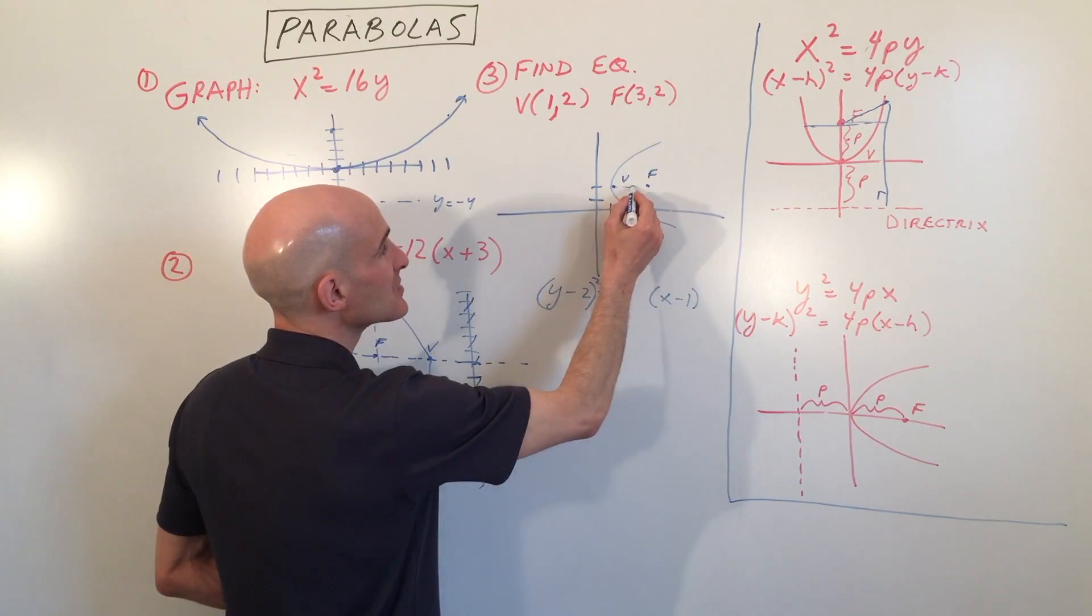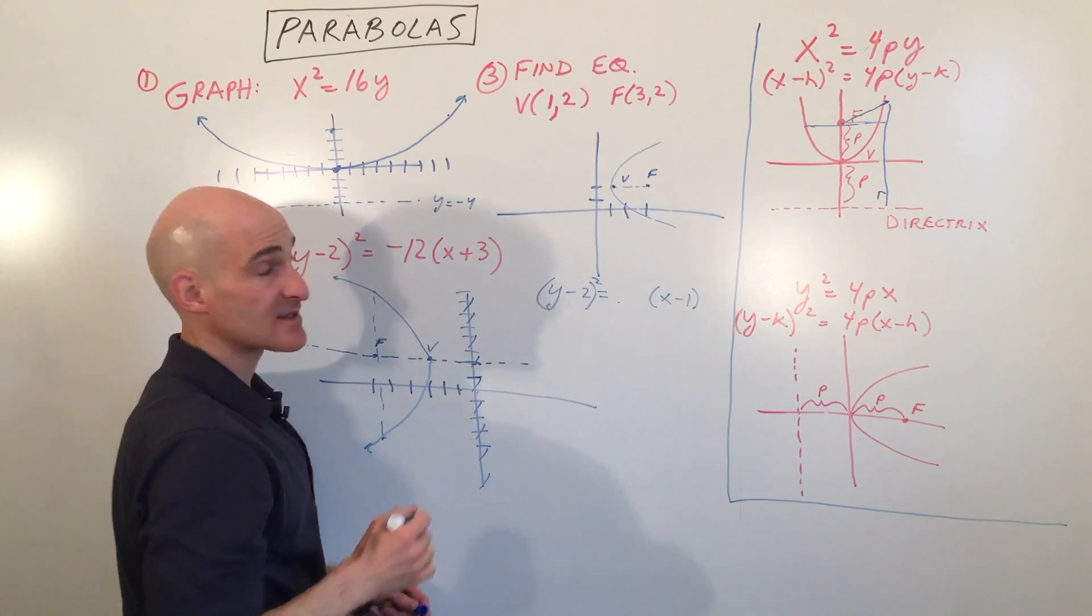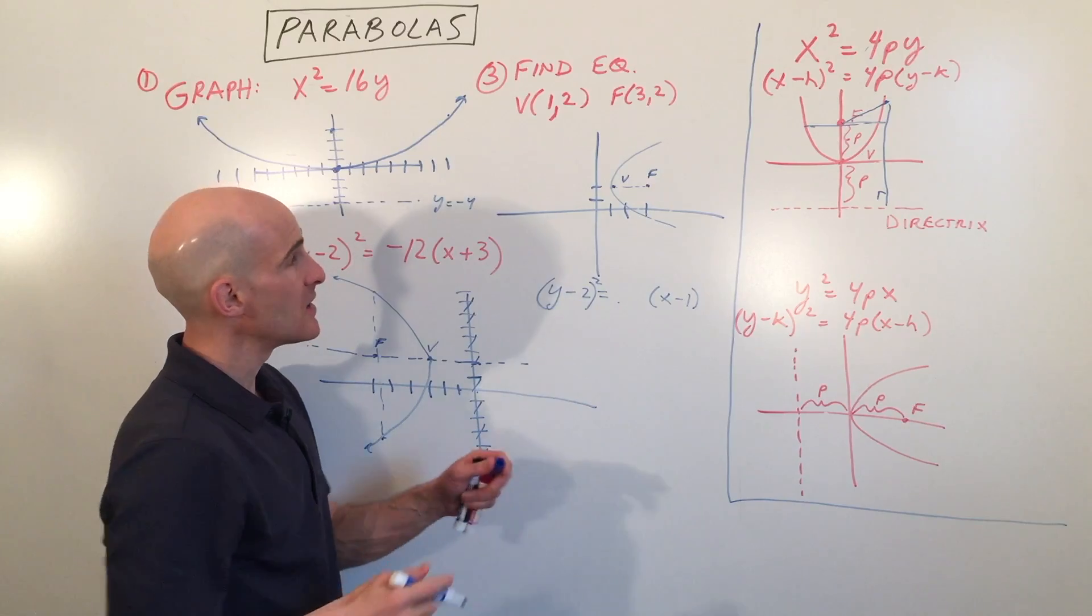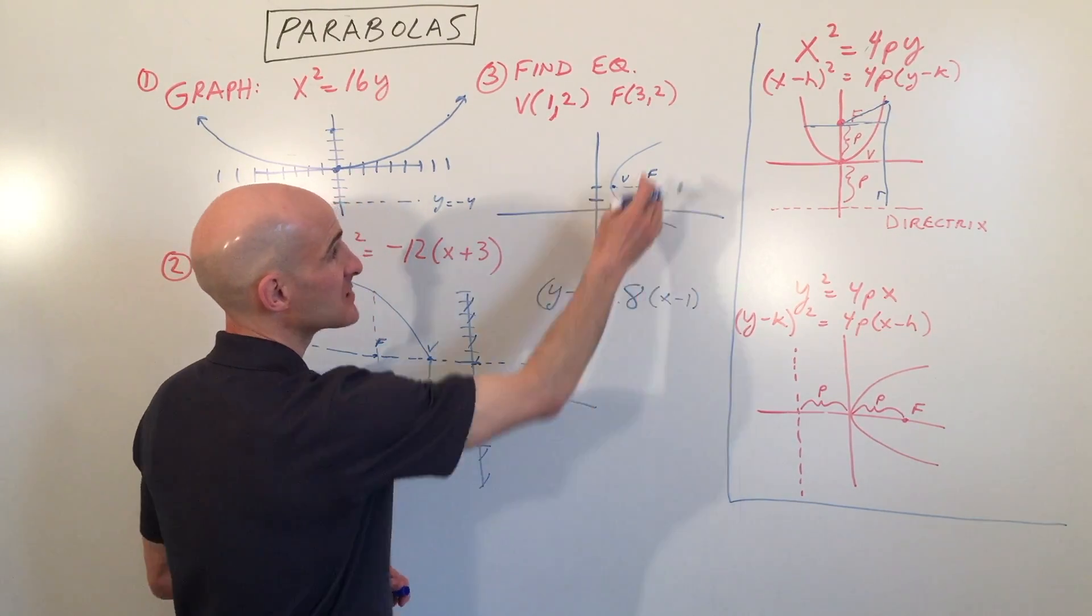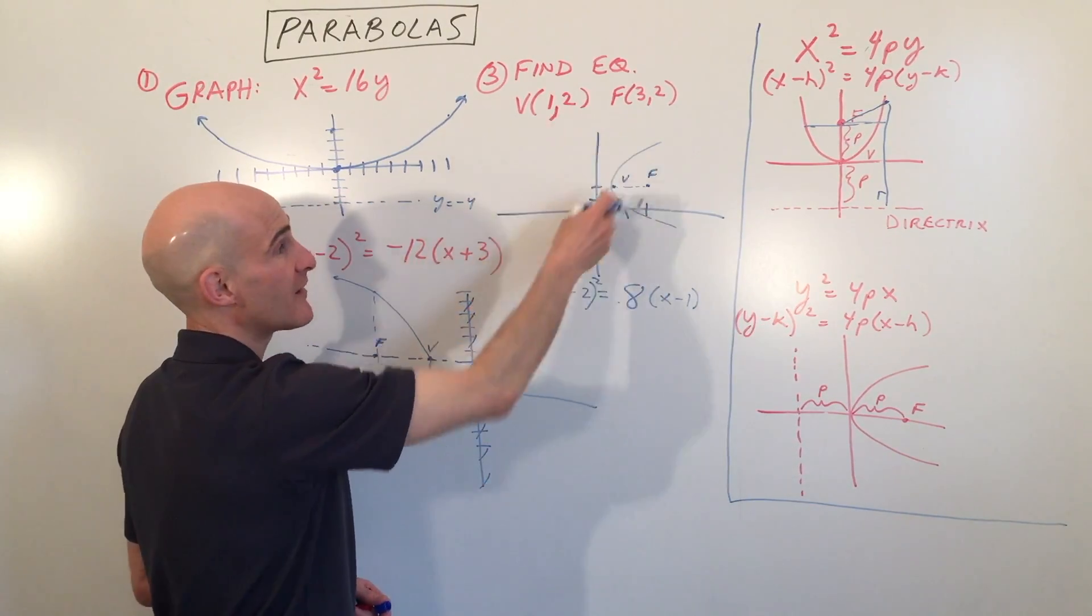Now we just have to find this value right here. The distance from the vertex to the focus, that distance is 2. That's the p distance, the focal distance. So 4 times 2 gives us 8. And it's a positive 8 because it's opening to the right. If it was opening to the left, it would be negative 8.